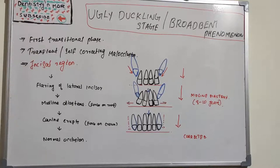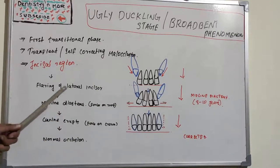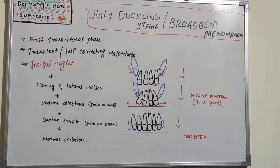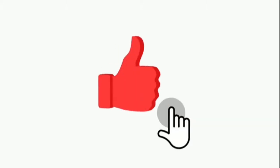So that is the Ugly Duckling Stage — it is a very transient or self-correcting malocclusion. Transient means it takes two to three years; once the canine is completely erupted, it will be over. There will be flaring of the lateral incisors and midline diastema formation, then the canine erupts and it reaches normal occlusion. That is all about the Ugly Duckling Stage, or Broadbent Phenomenon. I will come up with a new topic on Dentistry and More — thank you.